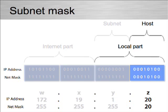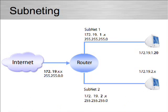This is subnetting. Going back to our example, the internet used the first 16 bits — 172.19 — to deliver a packet to our local router. Our router then looks at the subnet to figure out which local network to direct the packet onto — in this case network 1 — and finally the machine with the correct address, .20, picks up the packet.